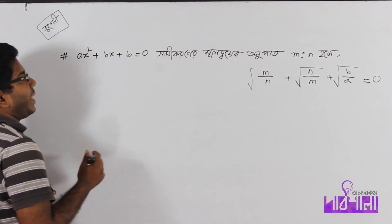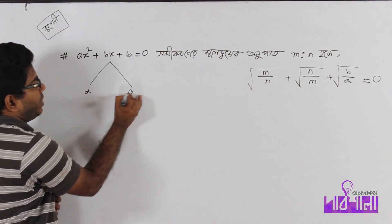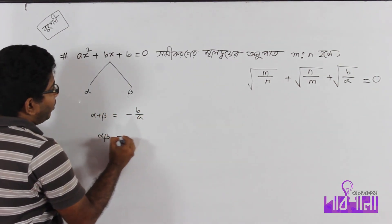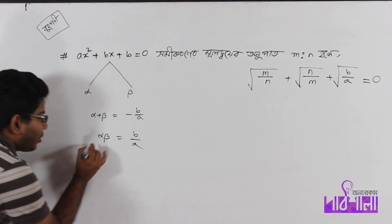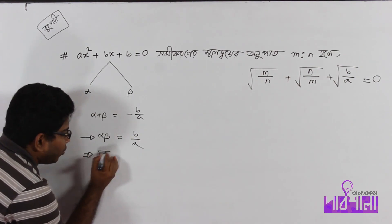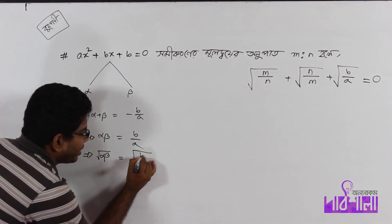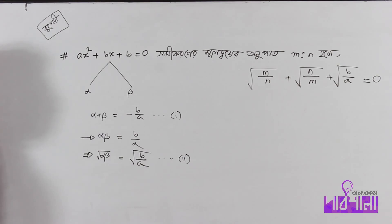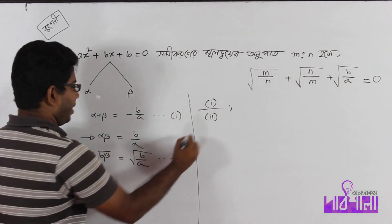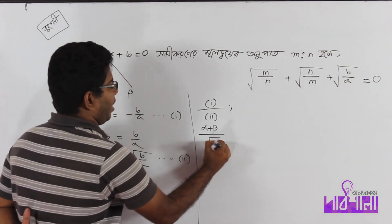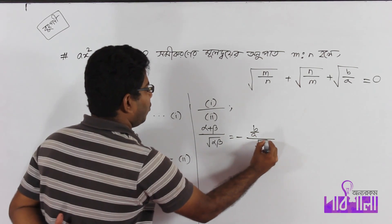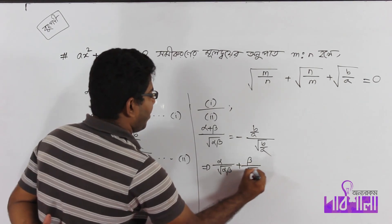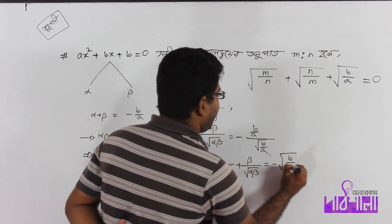Let's do a double check for the body in the alphabet. We want to find root over alpha by beta plus root over beta by alpha. We know alpha plus beta divided by root of alpha·beta equals minus b/a divided by root of b/a. So alpha divided by root(alpha·beta) plus beta divided by root(alpha·beta) equals minus root(b/a).